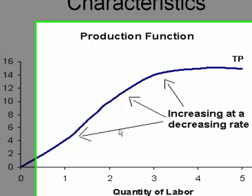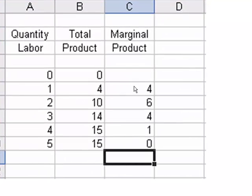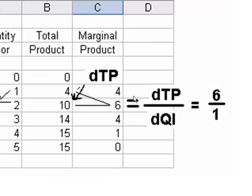The next step is to calculate the marginal product. You can see that I've done that here. In this slide, I've actually given you the math for that. I've taken the change in total product, which is six, divided by the change in the quantity of labor inputs, which was one. And so the marginal product of the first person, when I increased from one to two, was six.